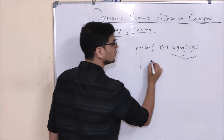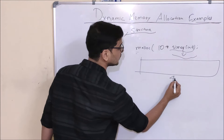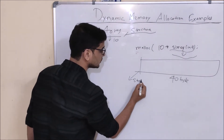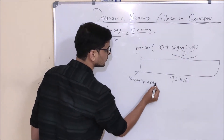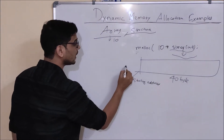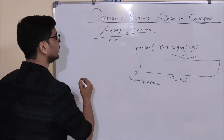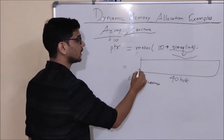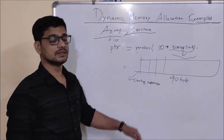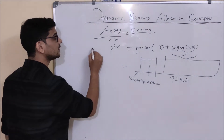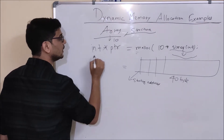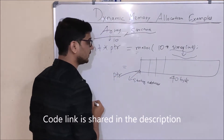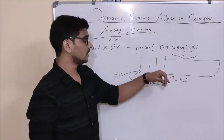So what this malloc will do is it will take a memory block of 40 bytes from the operating system and give us the starting address. As we are given a starting address, we need to store it in a pointer. And what kind of pointer will it be? The kind of data I am going to store — integer. So it is an integer pointer.